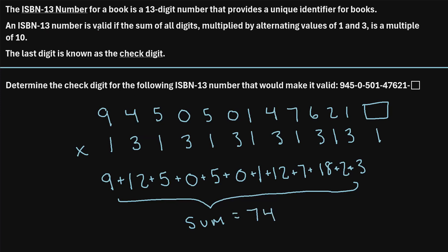Now we said that an ISBN 13 number is valid only if this sum right here is a multiple of 10. So if we're at 74 right now, what would be the next multiple of 10? Well, that would be 80. Because 80 is the next number higher than 74 that can be evenly divided by 10. So we can ask ourselves, 74 plus what would equal 80? Well, that would be 6.